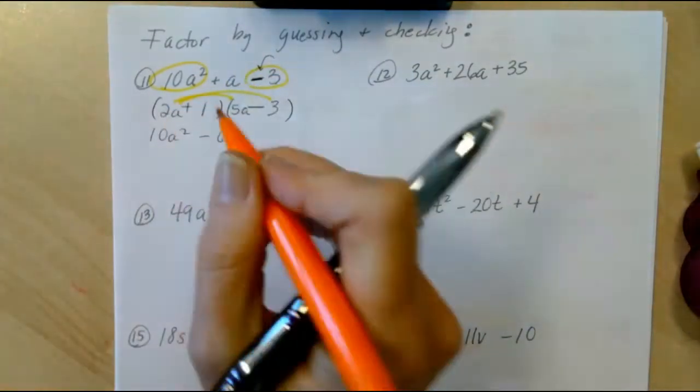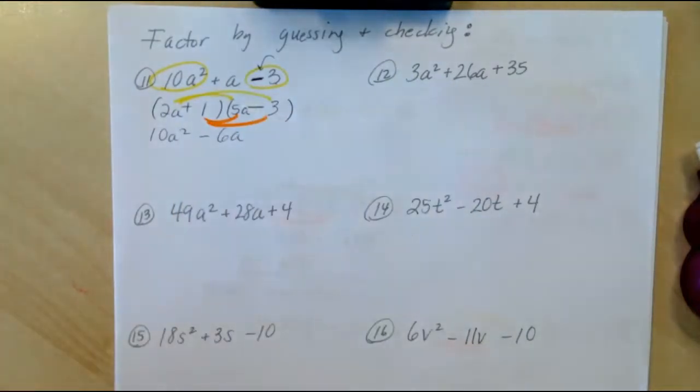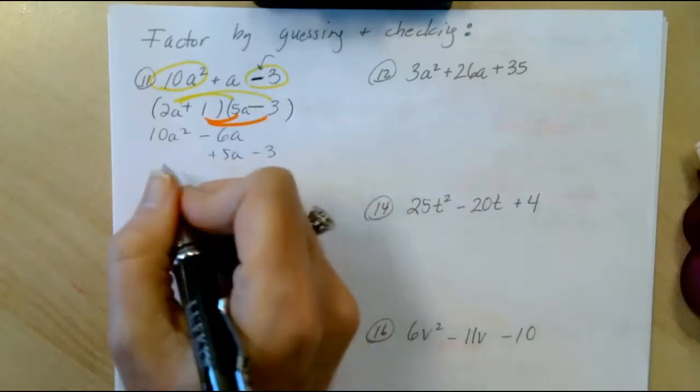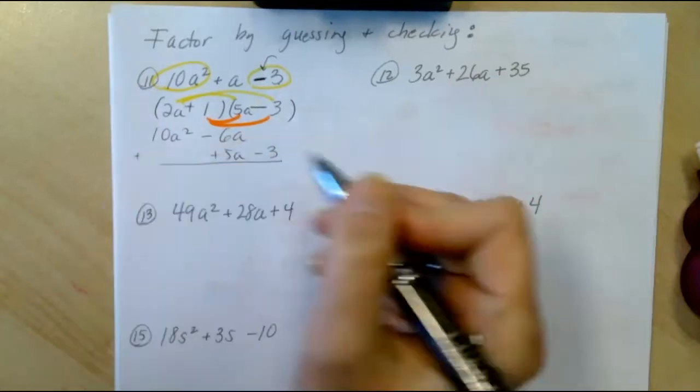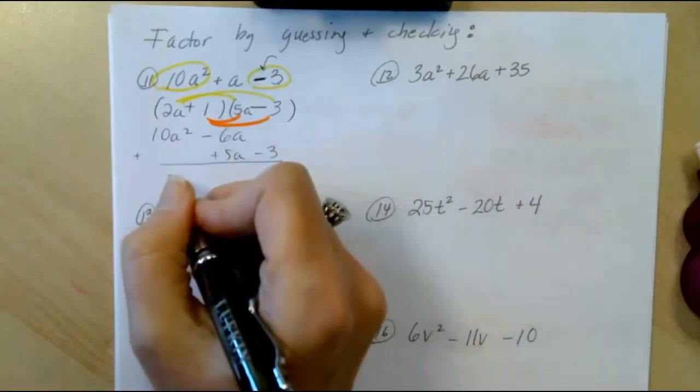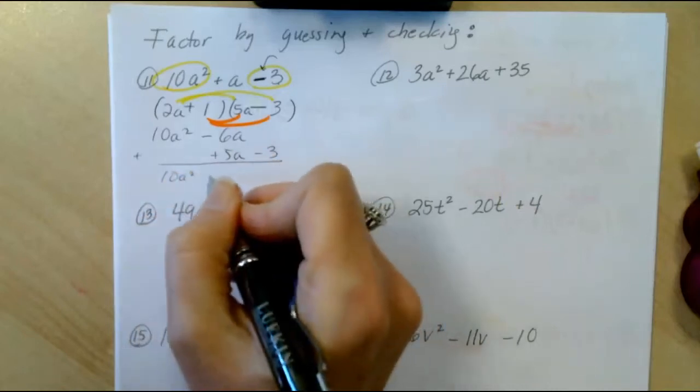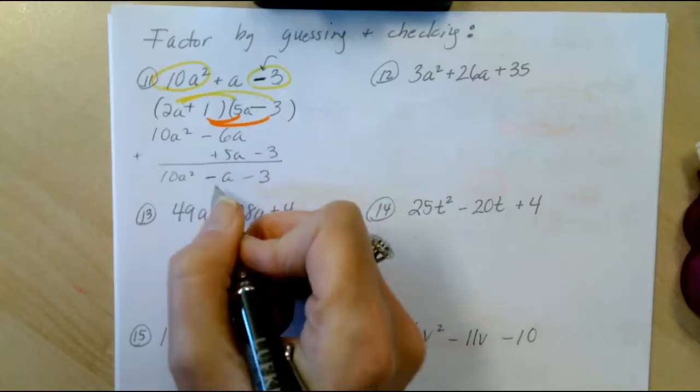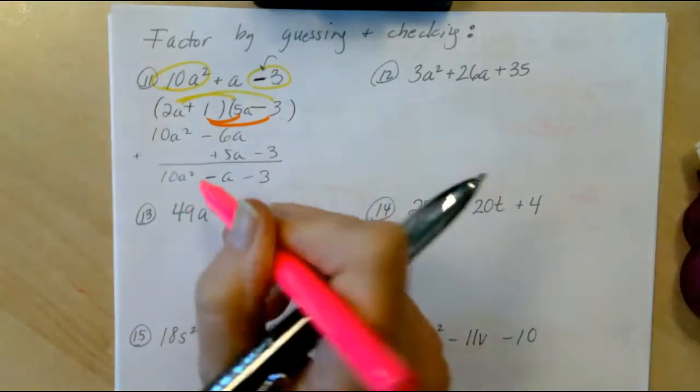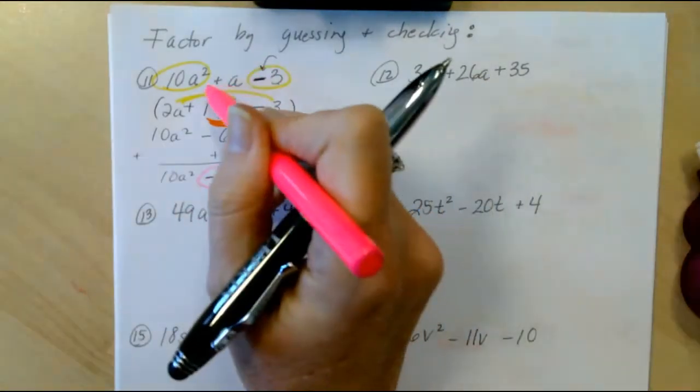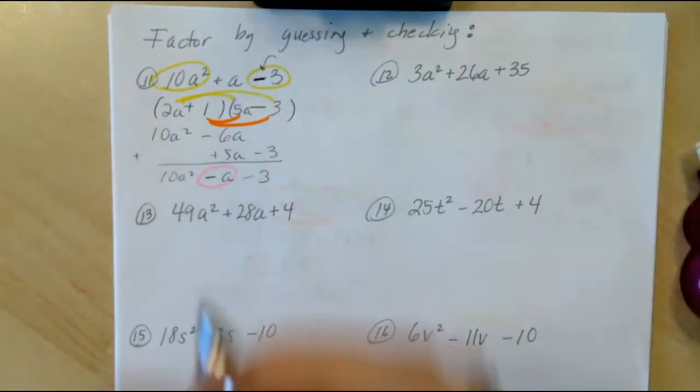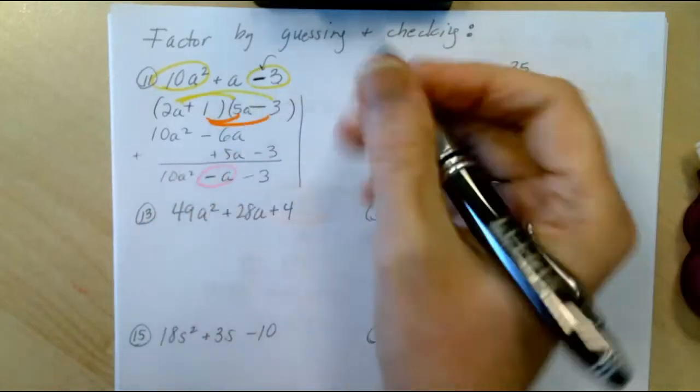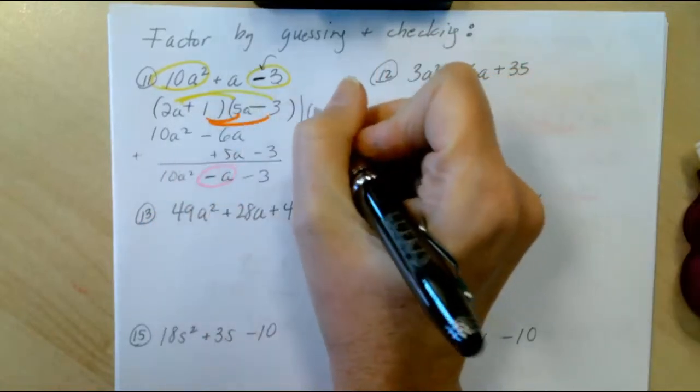Then we're going to distribute the 1, which will give us positive 5a and a negative 3. Now, when I add the like terms here, I'm so close. I end up with 10a squared minus a minus 3. So the only thing that is not right is the minus sign. So the best way to deal with that is to realize that all I have to do is switch those signs.